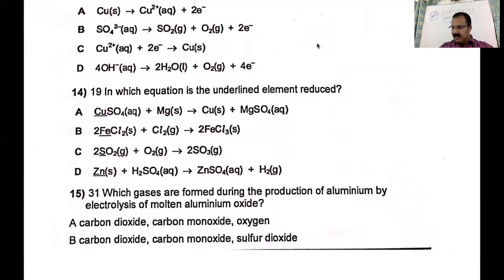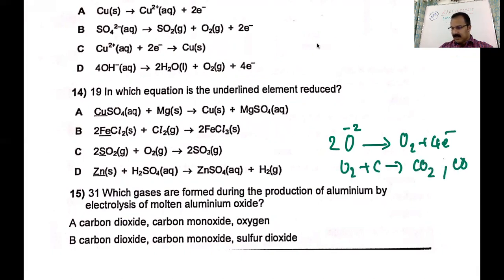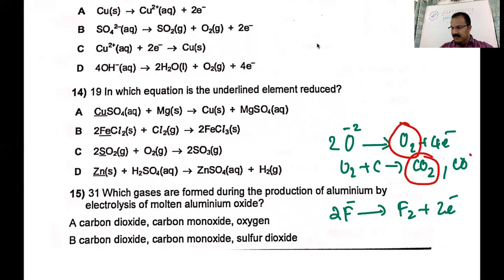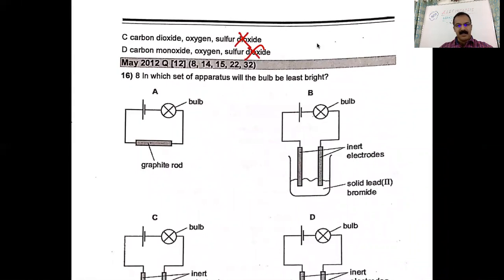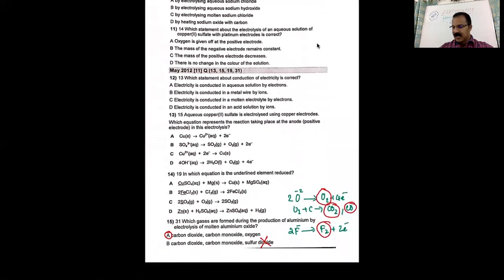Which gases are formed during the production of aluminum by electrolysis of molten aluminum oxide? O²⁻ gives O₂ + 4e⁻, and this O₂ reacts with the carbon anode to form CO₂ and CO. There is also a chance of fluoride ions from cryolite producing fluorine. So you can explain formation of four gases. Sulfur dioxide is never formed in this reaction, so any option containing sulfur dioxide can be ruled out. The correct answer is A.